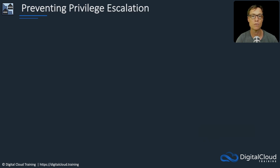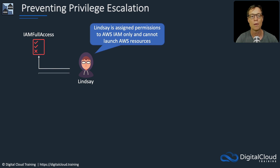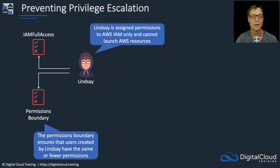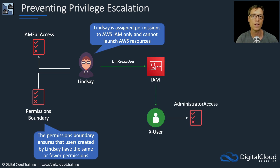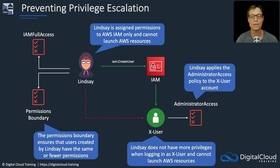So let's look at how we can prevent privilege escalation. Same situation with Lindsay — she has the same IAM full access policy, but in this case there's also a permissions boundary. The boundary ensures that any users created by Lindsay have the same or fewer permissions, so she cannot create a user account with more permissions than she has. She might run create user, create x user, and attach the administrator access policy — but when she logs in as that account, it won't have more permissions because they'll be restricted by the permissions boundary. Permissions boundaries have really averted a serious situation here, which is why it's important to think about how you use these when you assign permissions to your users.